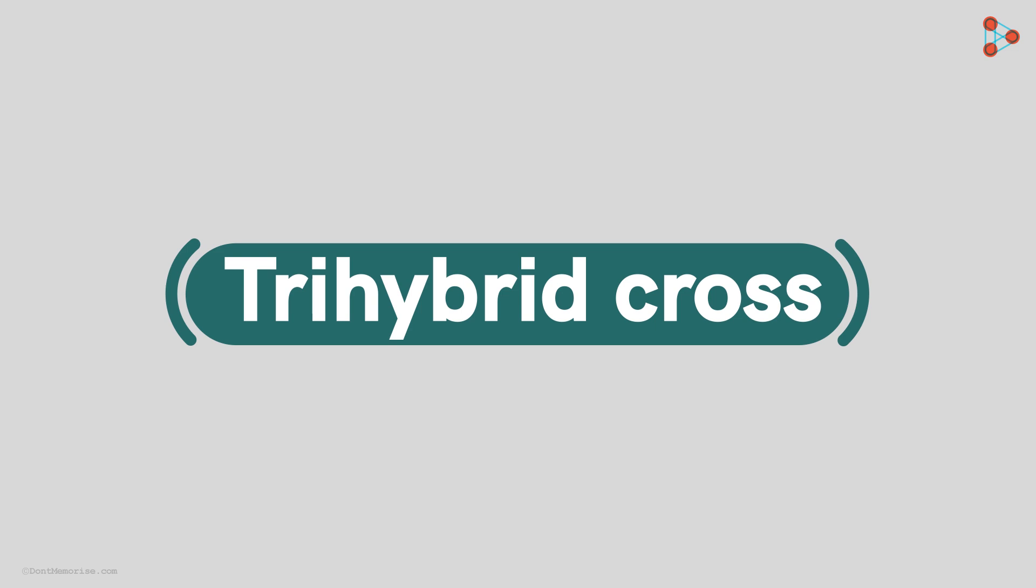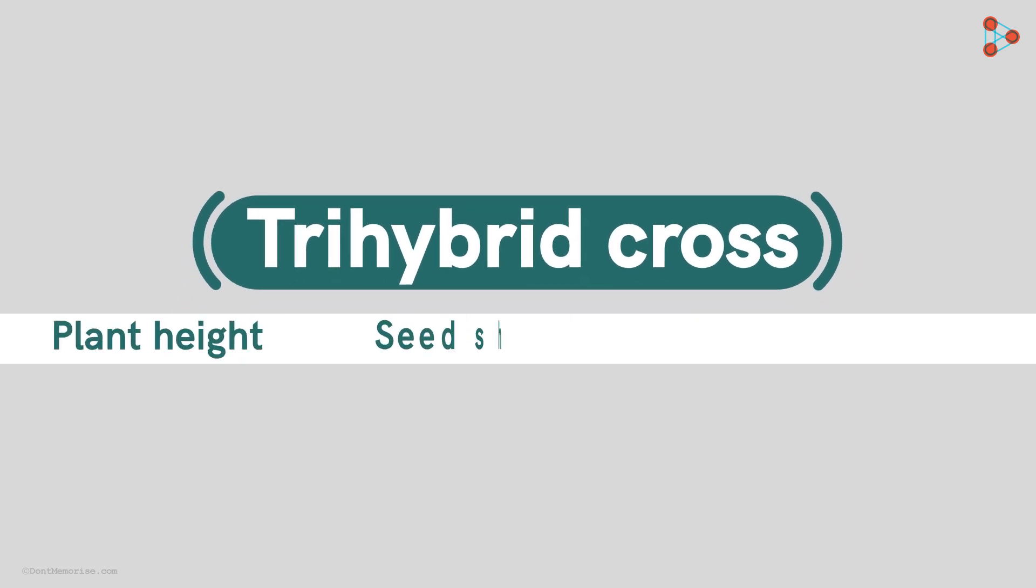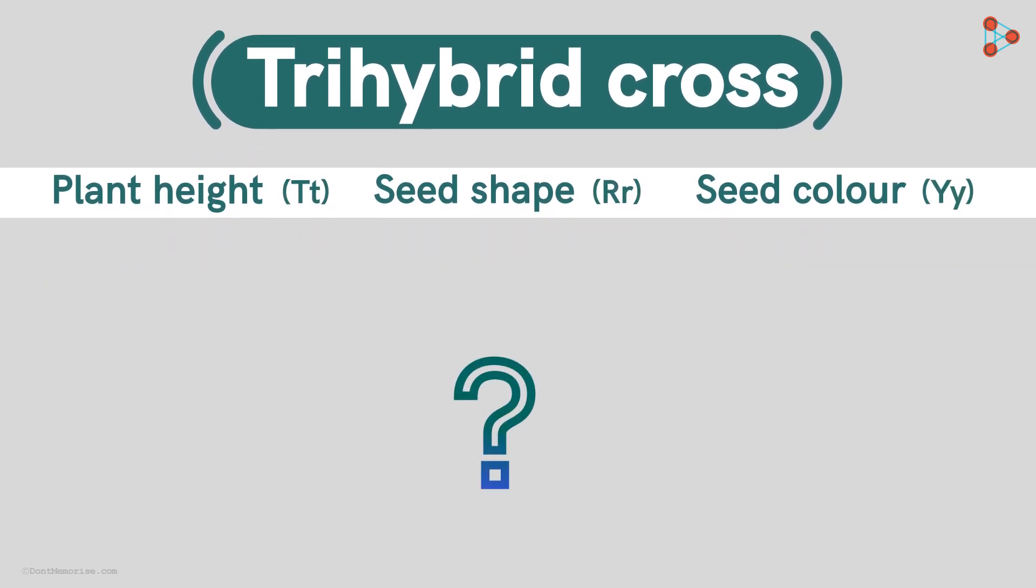we consider the 3 characters like the height of the plant, seed shape and seed colour all being genotypically heterozygous! Now can you guess how many possibilities or combinations of gametes will be formed from these?